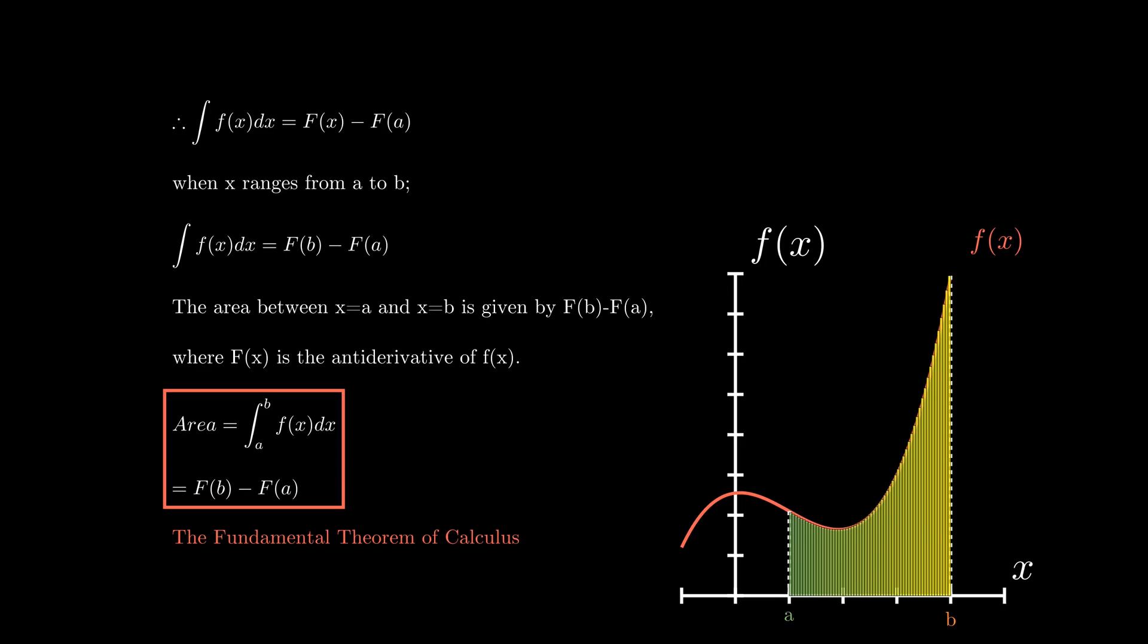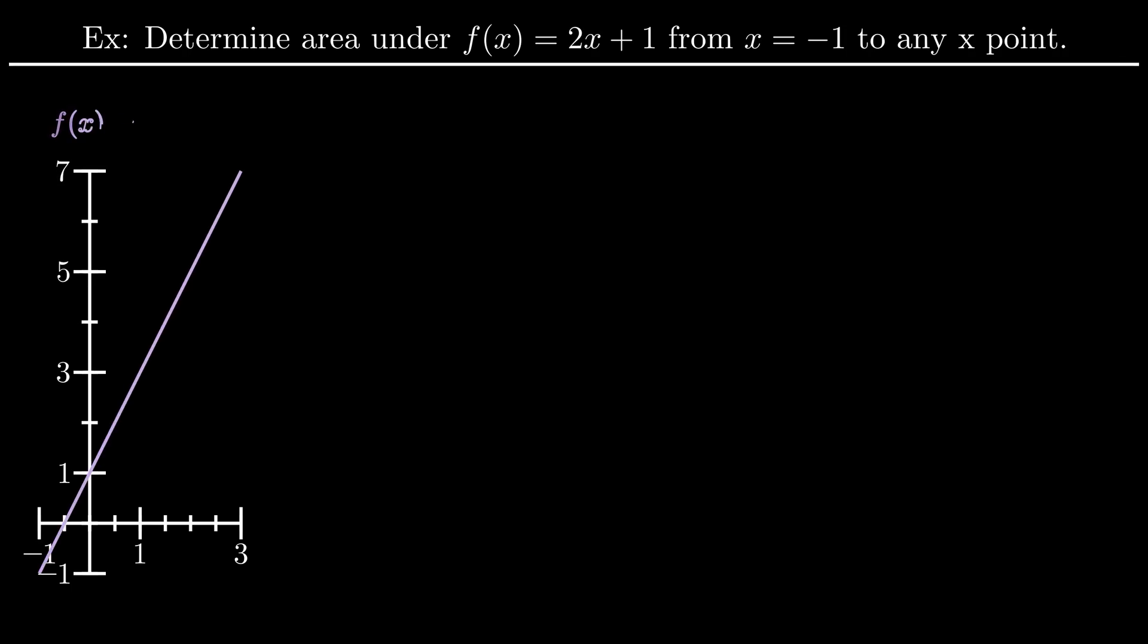And with an example, we're going to see exactly how areas and slopes are kind of inverses of each other. Consider the example of determining the exact area under f of x equals 2x plus 1 from x equals negative 1 up to any x point. Without considering any calculus, let's just add some areas together, since they'll just be triangles or trapeziums.